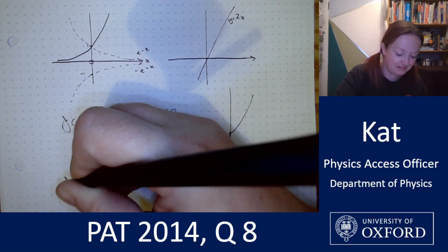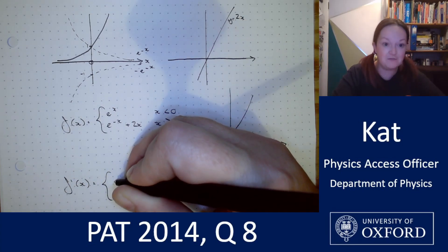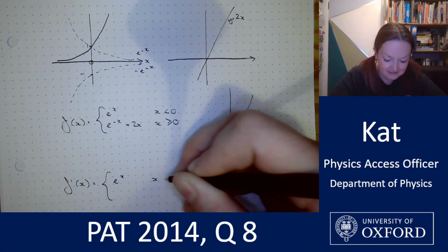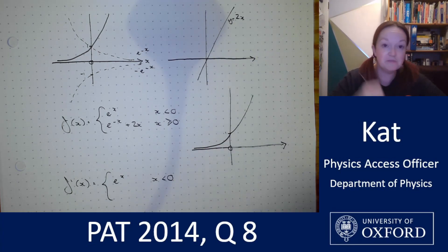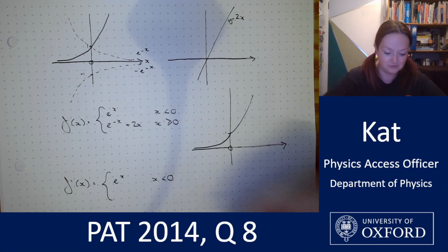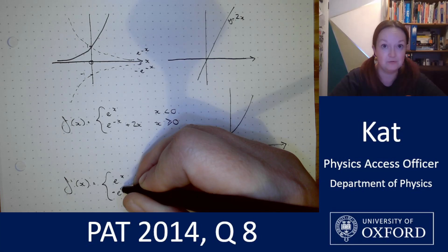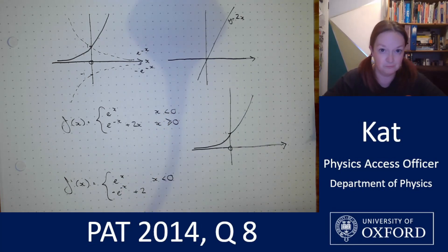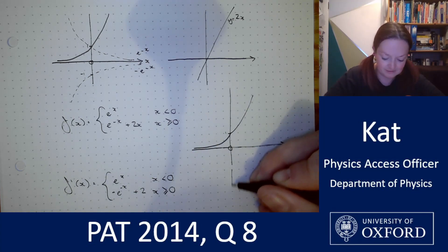So let's move on to finding the first derivatives of our function. The derivative of e to the x is e to the x so for x is less than zero my curve is unchanged. The derivative of e to the negative x plus 2x becomes negative e to the negative x plus 2. So far so good. That is my value for x is greater than or equal to zero. Let's move on and sketch it.